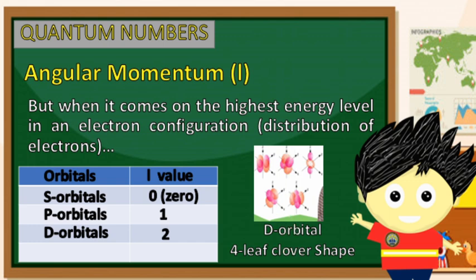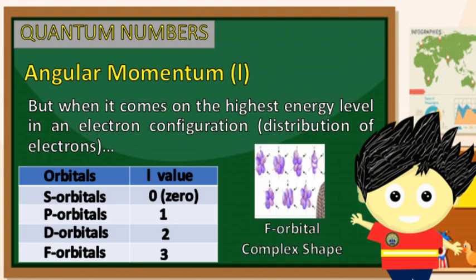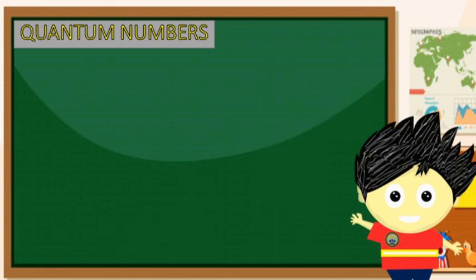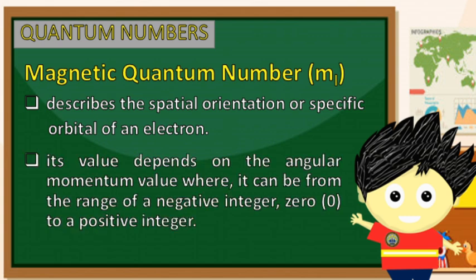Ang hugis nito ay komplikado kaysa sa s and p orbitals. Tandaan natin na sa bawat energy level nito, mayroon itong limang 4-leaf clover. At huli, ang f-orbital na may L value na 3, kung saan ang hugis nito ay mas mahirap isalarawan at masyadong kompleks. Ito ay may pitong f-orbital sa isang energy level. Ang ikatlong quantum number naman ay tinatawag nating magnetic quantum number na nire-represent ng ml. It describes the spatial orientation or specific orbital of an electron. Ang value nito ay nakadepende sa ating angular momentum number, kung saan magkakaroon ng magnetic quantum number o ml mula sa isang negative integer to a positive integer.